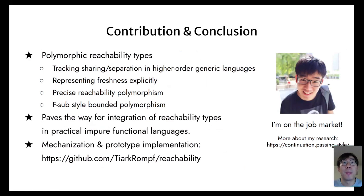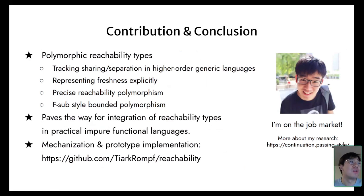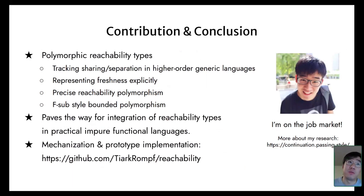Another question: once you introduce these kinds of separation properties, it becomes tempting to use them to justify rewrites in a compiler. Have you thought much about the equational theory of your language with reachability types? We actually had an OOPSLA 2023 paper on a compiler IR with reachability types, and we have ongoing work using logical relations to formalize the equational theory to justify rewriting rules. That is work in progress, and we have an arXiv draft available.